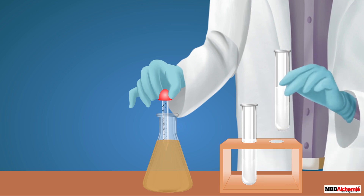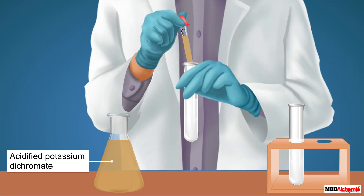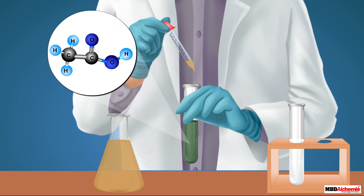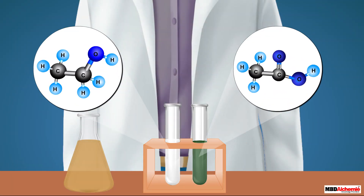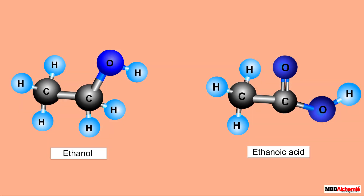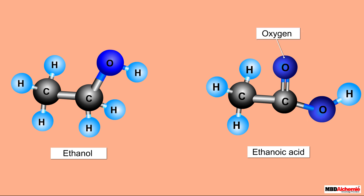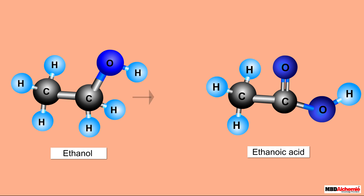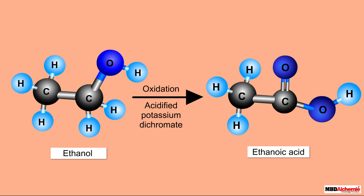Similarly, let's take another carbon compound, ethanol, in a test tube. Now add a small amount of acidified potassium dichromate to it — it will result in the formation of another carbon compound, ethanoic acid. If we compare the structure of ethanol and ethanoic acid, we see that in an ethanol molecule there is only one oxygen atom attached to one of the carbon atoms, whereas in a molecule of ethanoic acid there are two oxygen atoms attached to the same carbon atom. So ethanol undergoes oxidation to give ethanoic acid in the presence of acidified potassium dichromate.